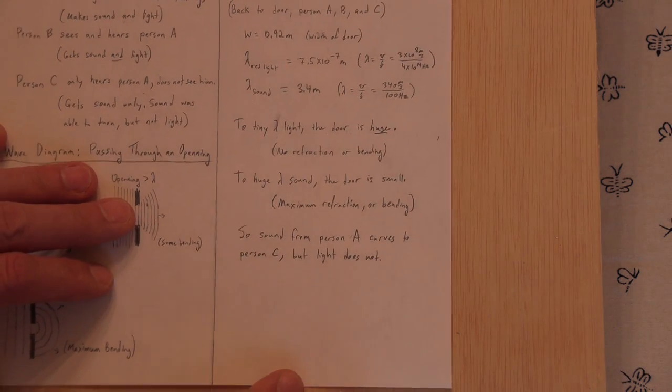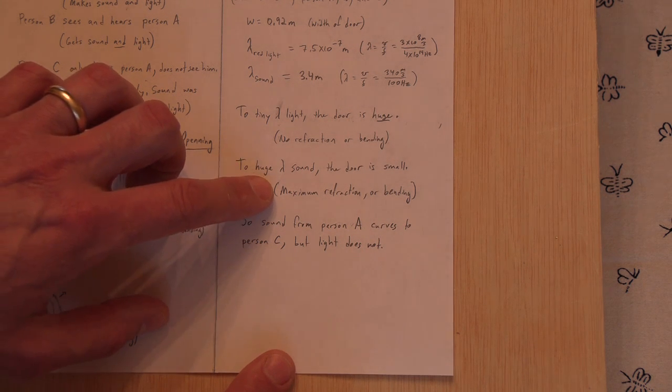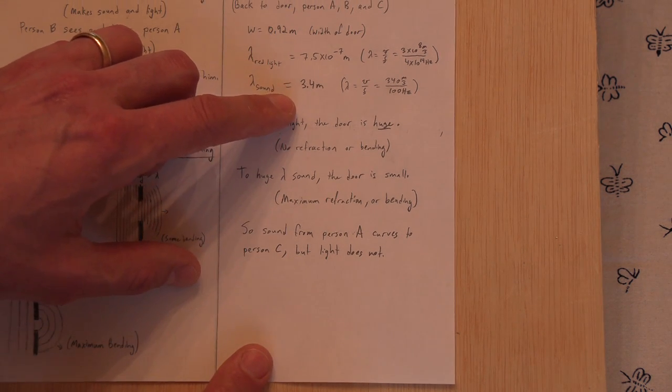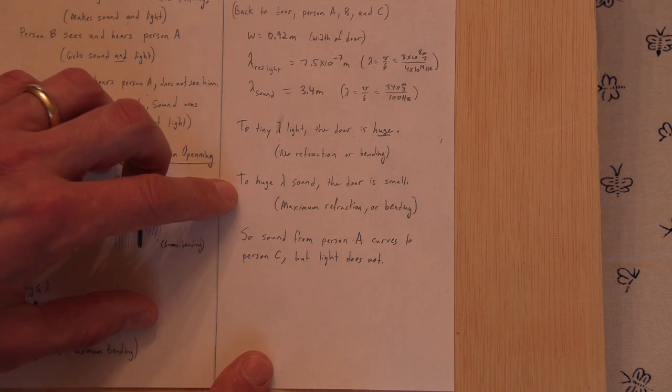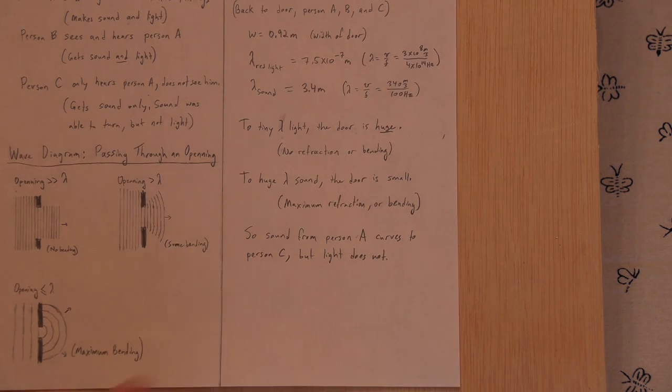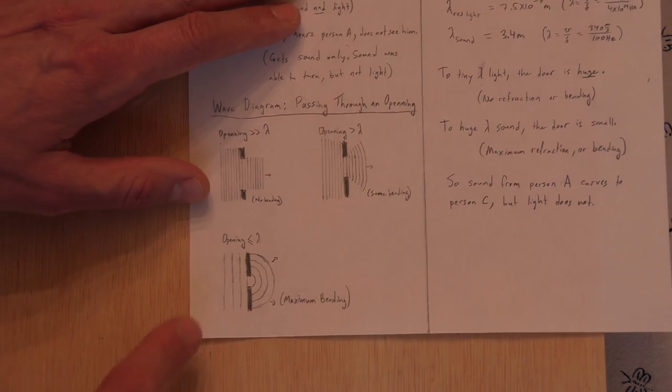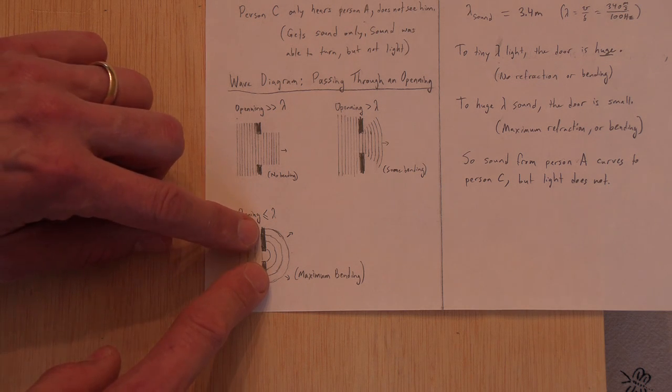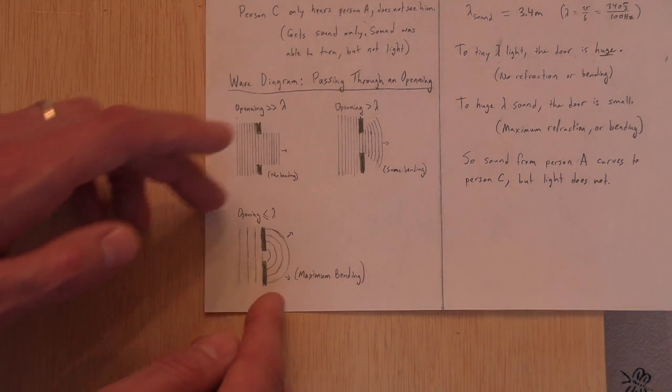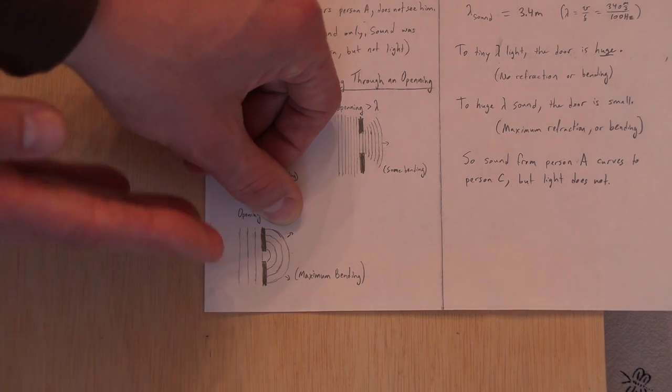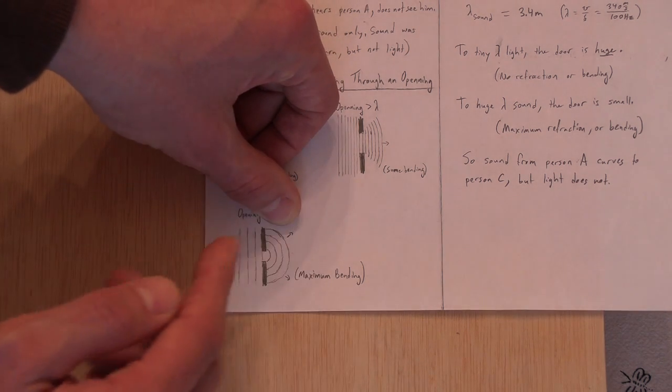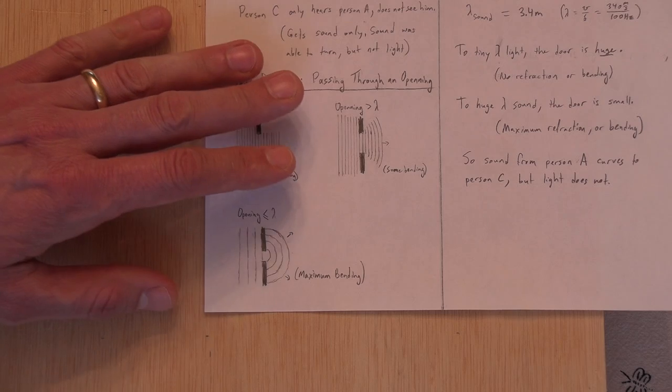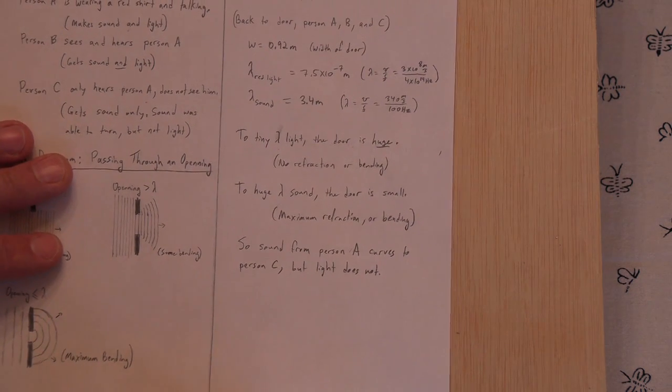But to the sound, which is huge, it's 3.4 meters, compared to a 0.92 door, the door is pretty small. It's smaller than the sound wave. So that causes maximum diffraction. It's like this scenario. So we got a small door and a relatively large wave and you get bending. So when you're in the back of the room, the sound from me comes and rounds that corner and gets to your ear.